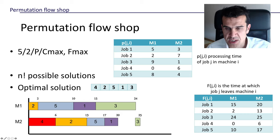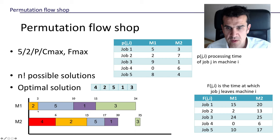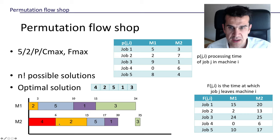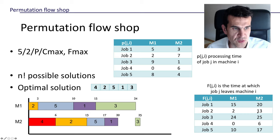The second job enters machine one as soon as job four has left, at time zero, and stays there for two time units. Once it leaves machine one it goes to machine two, but machine two is busy processing job four. So job two has to wait until job four finishes on machine two, then at time six it enters machine two and stays for seven time units, leaving at time 13. Job two leaves machine one at time two and machine two at time 13.